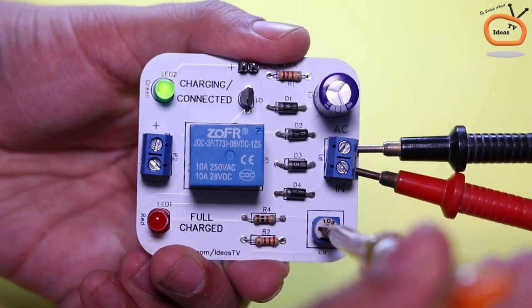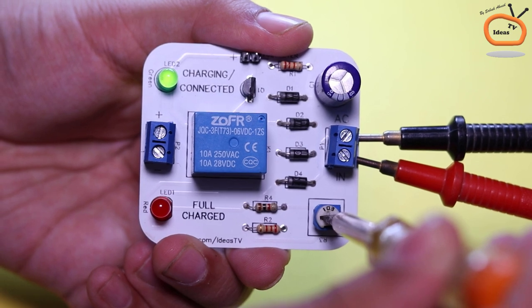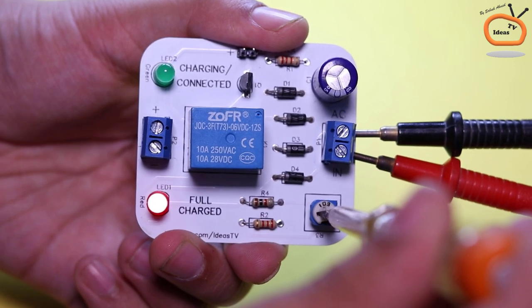Now slowly rotate the variable resistor with the help of a screwdriver until the right LED turns on.